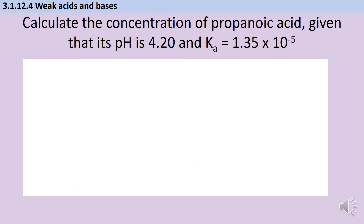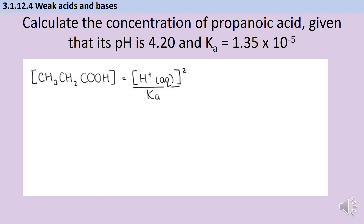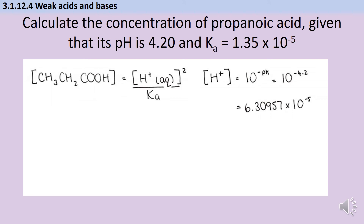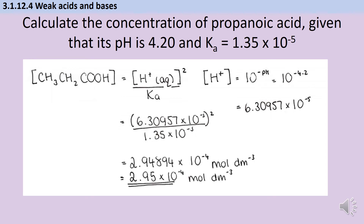Here's a second example: calculate the concentration of propanoic acid when pH = 4.20 and Ka = 1.35 × 10⁻⁵. Write the rearranged Ka expression straight away. Find [H⁺] = 10^(−4.20) = 6.30957 × 10⁻⁵ mol dm⁻³ — keep as many digits as possible to avoid rounding errors. Substituting [H⁺] and Ka gives a concentration of 2.94894 × 10⁻⁴ mol dm⁻³, recorded to three significant figures to match the question: 2.95 × 10⁻⁴ mol dm⁻³.